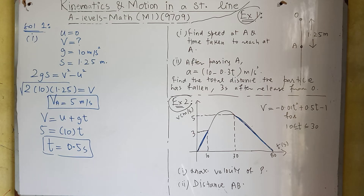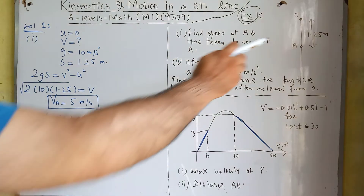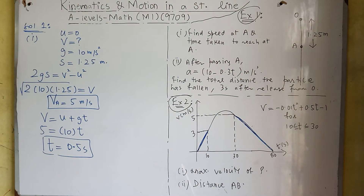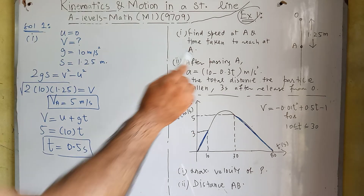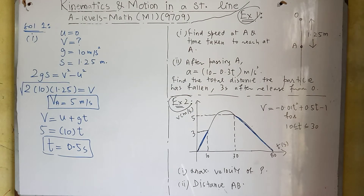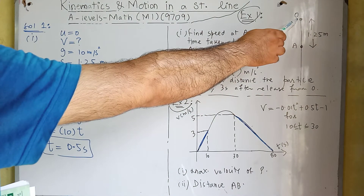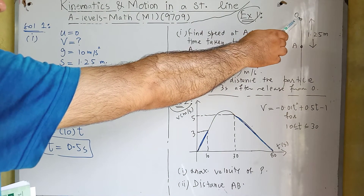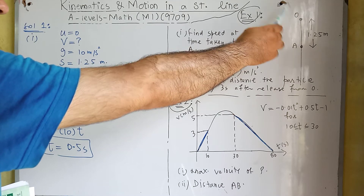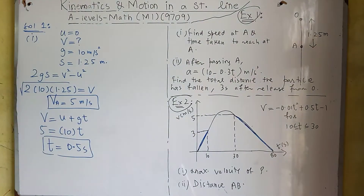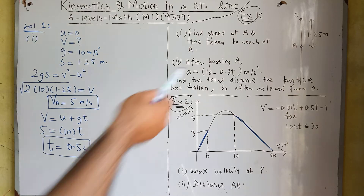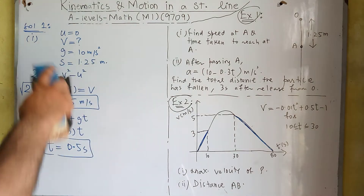After passing point A, it is given that the acceleration of this particle is (10 - 0.3t) meters per second squared. We need to find the total distance the particle has fallen 3 seconds after release from O. The time starts at O, and we need to find how much distance the particle covers after 3 seconds. Let's start the solution of part 2.